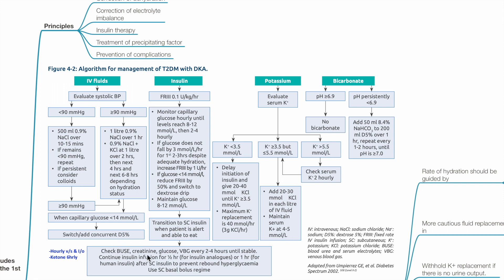Check U&Es, creatinine, glucose, VBG every 2-4 hours until stable. Hourly vital signs and intake output chart. Ketones 6-hourly. Continue insulin infusion for half an hour for insulin analogs or 1 hour for human insulin after subcutaneous insulin to prevent rebound hyperglycemia. Use subcutaneous basal bolus regime once DKA resolution.